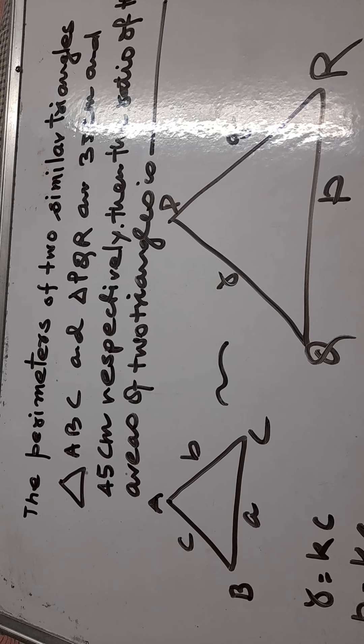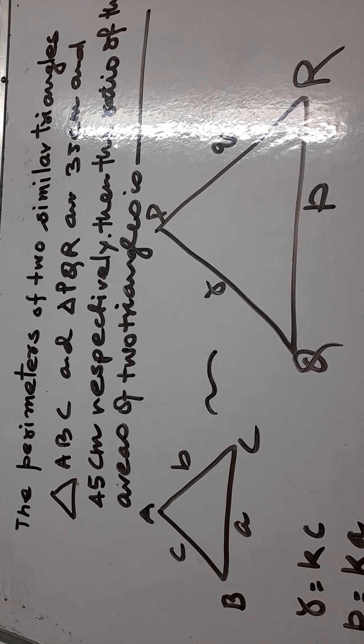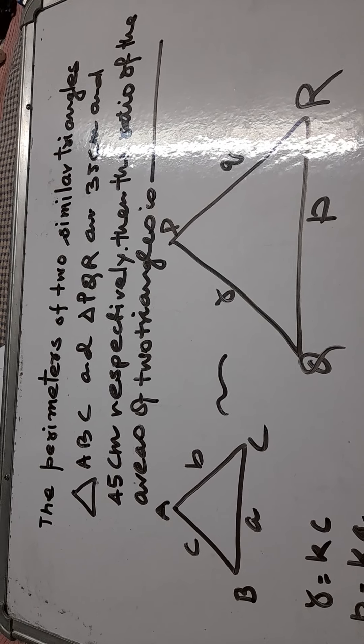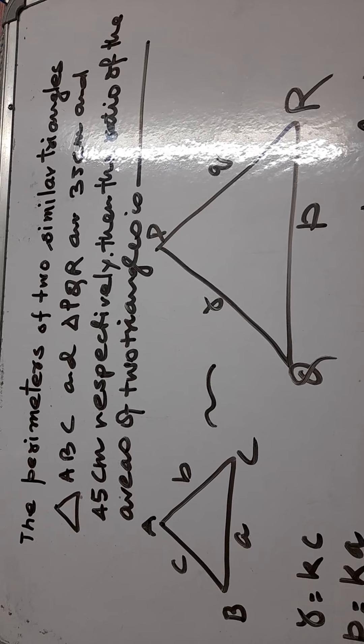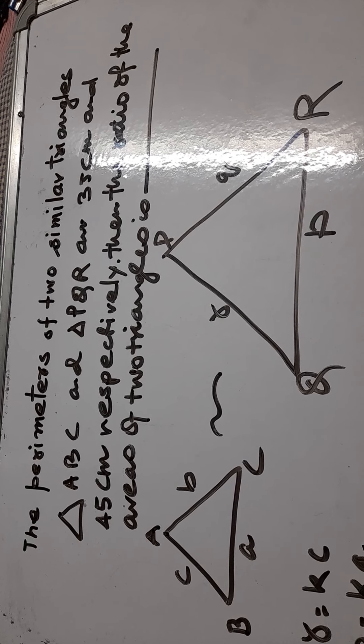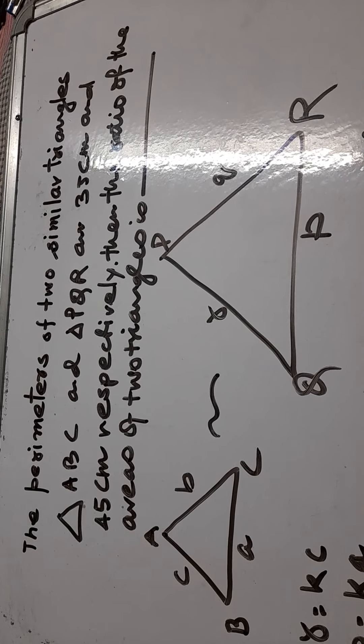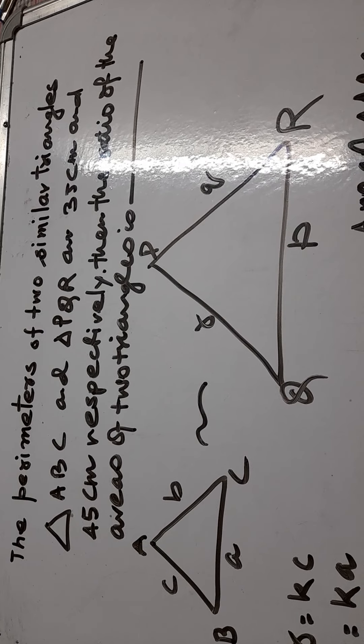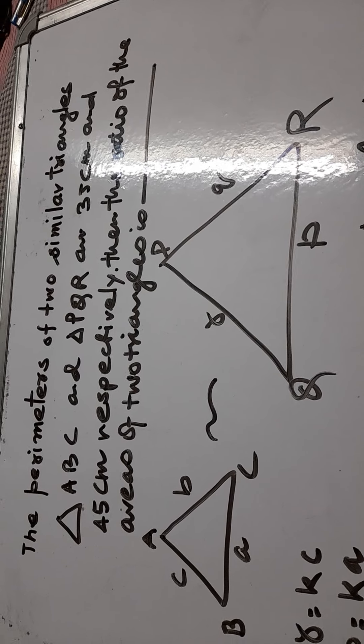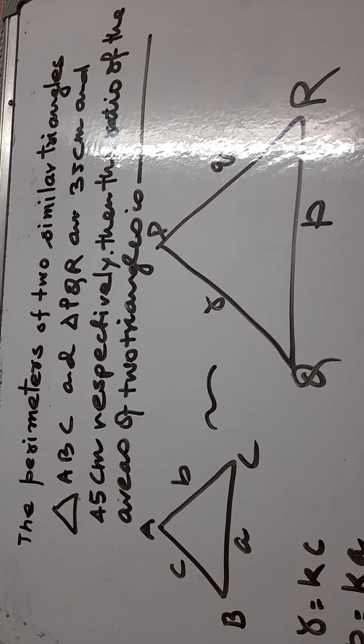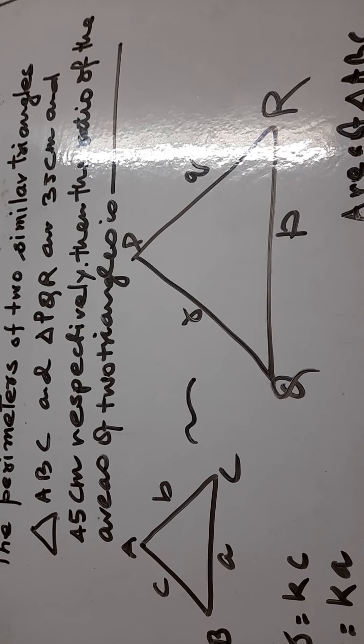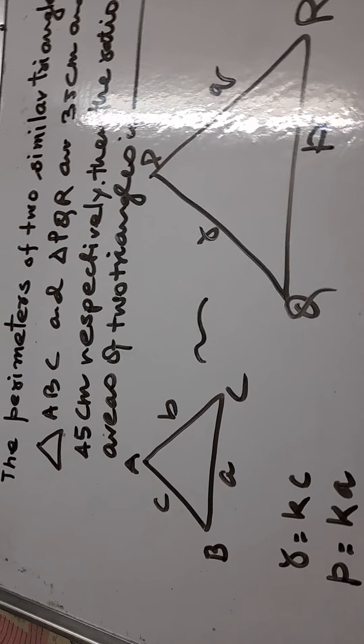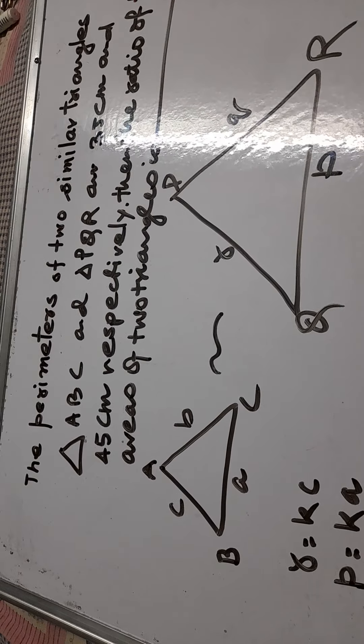Here I am present with the second question, second probable question. The question is, the perimeter of two similar triangles ABC and triangle PQR are 35 cm and 45 cm respectively. Then the ratio of the areas of two triangles is. I'll make you understand with a diagram. Suppose ABC is a triangle and PQR is another triangle and they are similar.